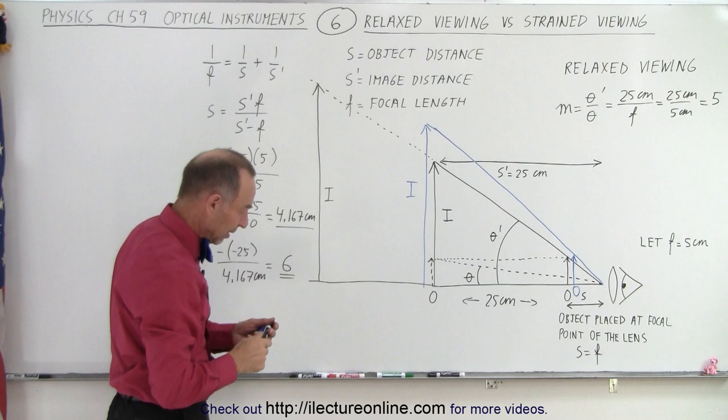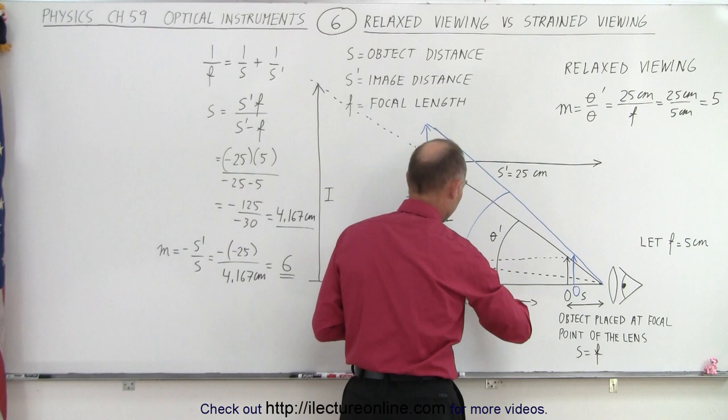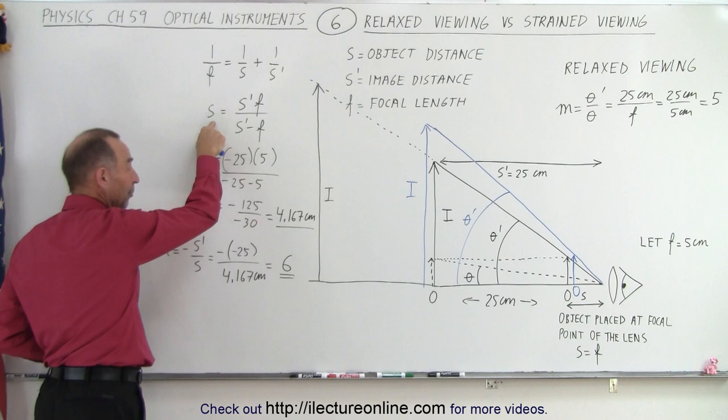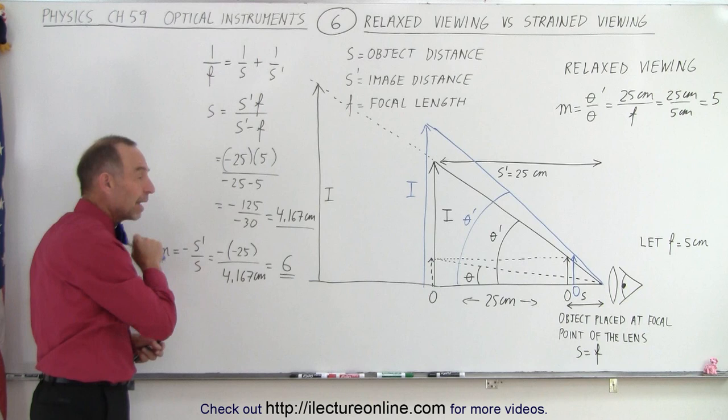But then when we place the object in a little bit closer, it causes the image to be a little bit bigger. So now we have a new theta prime, which is bigger than the old theta prime. And using the old technique of using your lens equation, we can find the object distance where the object needs to be placed. And then from that, we're able to calculate the new magnification, where now we can see that it's more. It's 6 instead of 5.